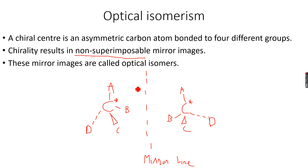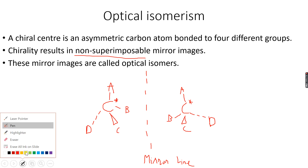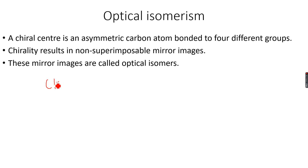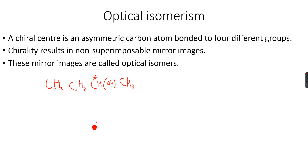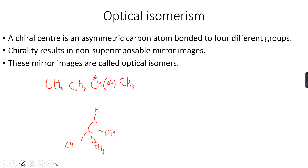Optical isomerism only occurs when there is a chiral center, and a chiral center is a carbon atom attached to four different groups. Let's take the example of CH3CH2CHOHCH3. Look at the second carbon atom — it is a chiral center because it is attached to H, OH, a CH3 group, and a CH2CH3 group: four different groups.